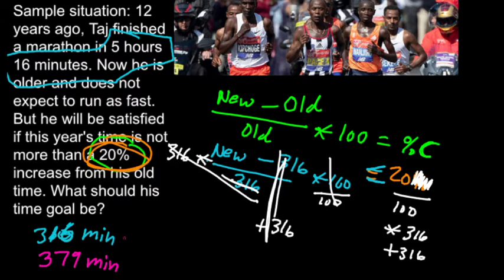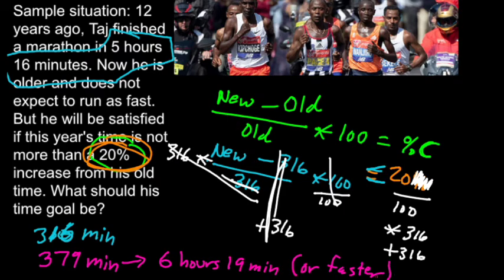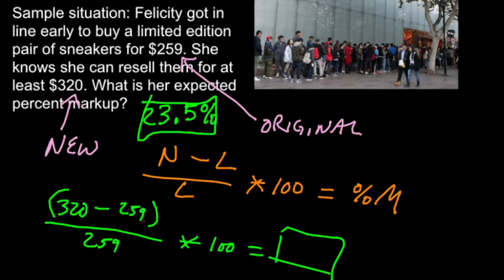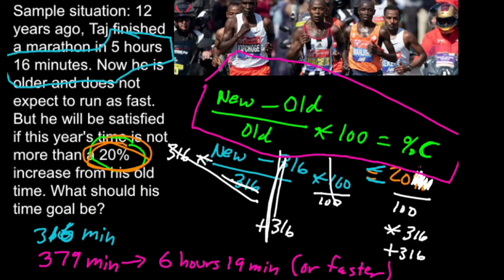Translating 379 minutes back into hours and minutes: 360 minutes is 6 hours, leaving 19 minutes. So he wants to aim for no more than 6 hours, 19 minutes this year — maybe a handful of seconds because of that decimal. To summarize: you have a formula, identify what information you have from the problem, input it, and sometimes it's easy arithmetic for the percent; sometimes it's a bit harder because you're missing a piece and need algebra.